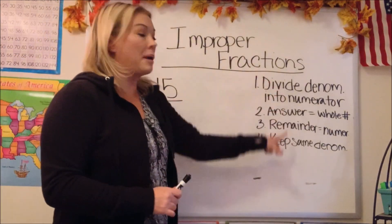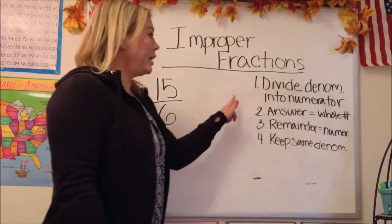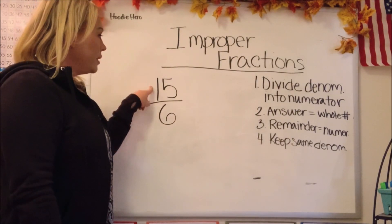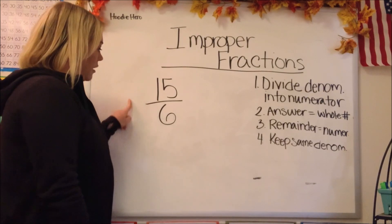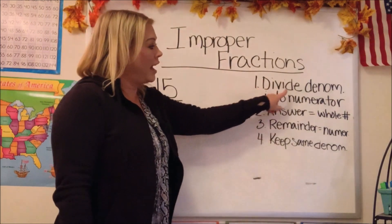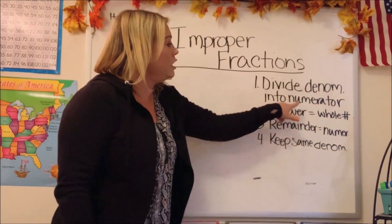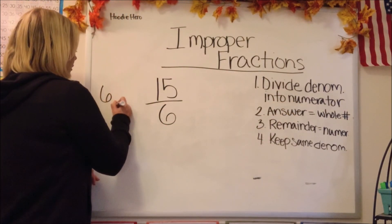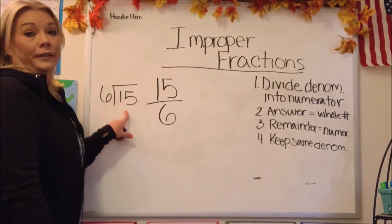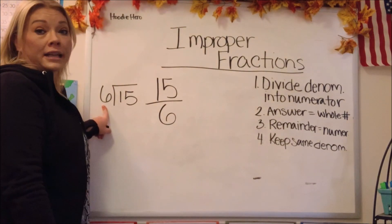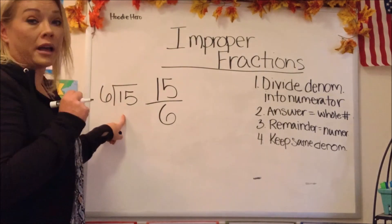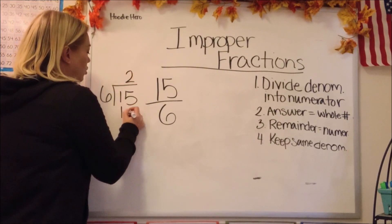Before we move on, I've written the steps down — abbreviated for space. Here we have another fraction: 15 over 6. We know it's improper because it's top heavy and there's no way we could take 15 when there are only 6 to begin with. Step one: divide the denominator into the numerator. Our denominator is 6 and our numerator is 15. How many times can 6 go into 15 evenly? 6 times 1 is 6; 6 times 2 is 12. 6 times 3 is 18 — that's too much. So let's stick with 2; 6 times 2 was 12.